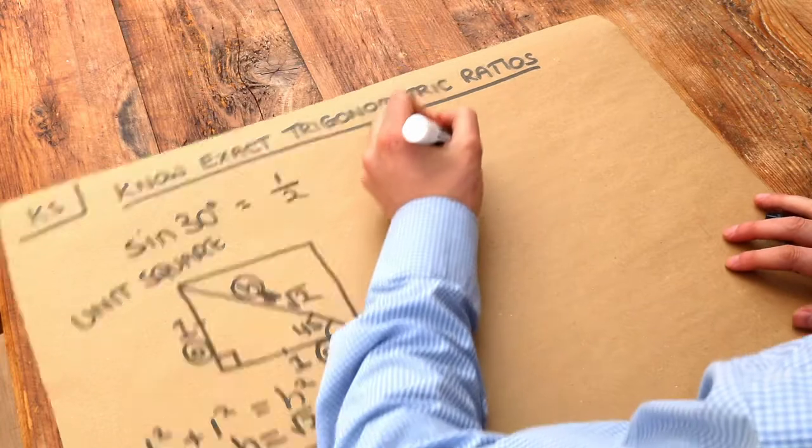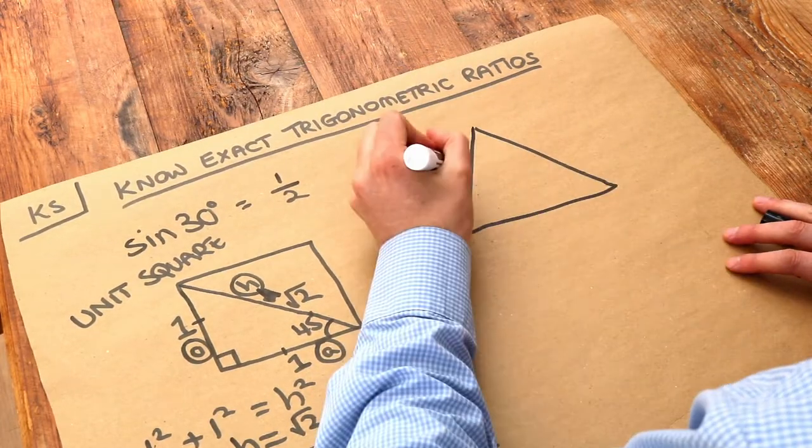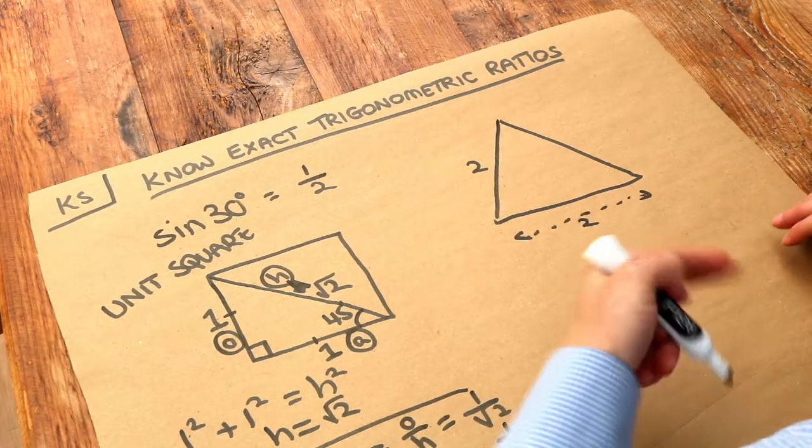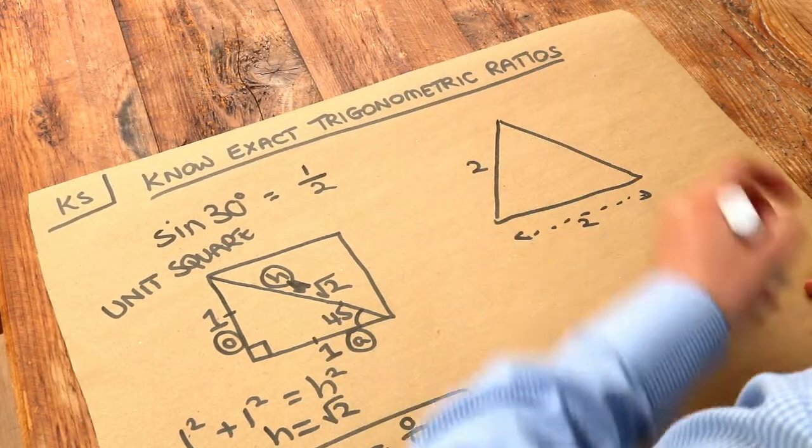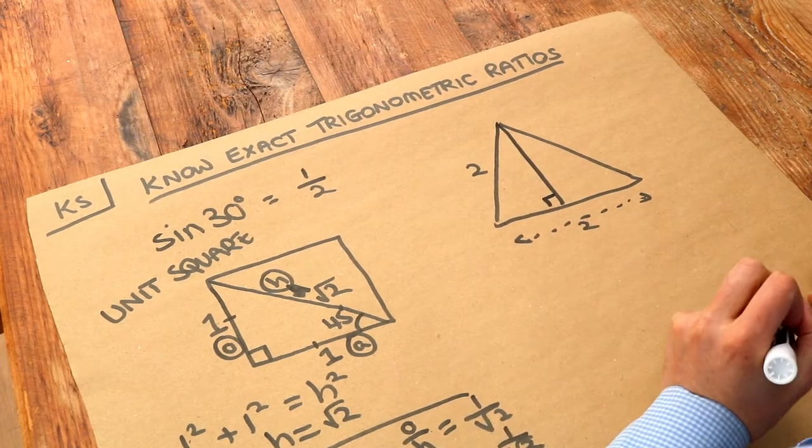Now, the other shape we consider is an equilateral triangle of side 2. We need a right-angled triangle in order to be able to use trigonometry. So I'm going to split this in half.